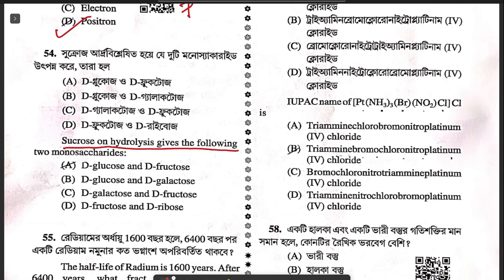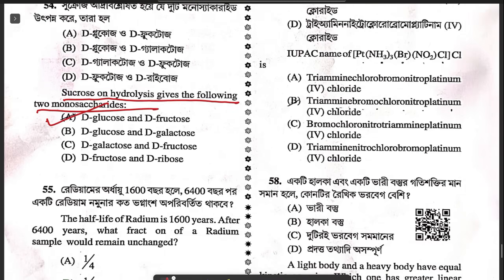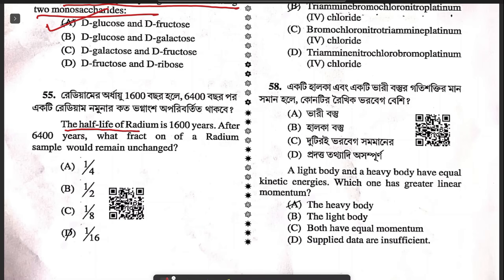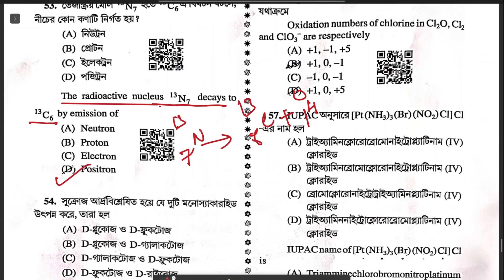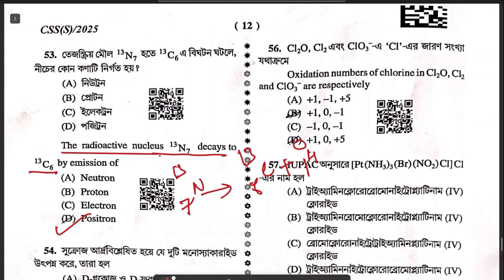Question 54: sucrose on hydrolysis gives two monosaccharides — D-glucose and D-fructose. Question 55: the half-life of radium is 1600 years. After 6400 years — which is 4 half-lives — the fraction of the radium sample that remains unchanged is 1/16.